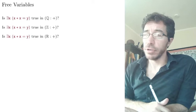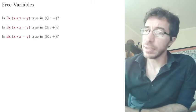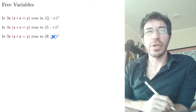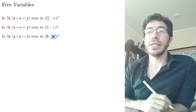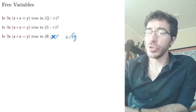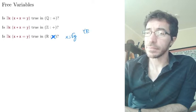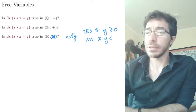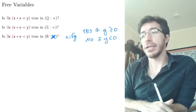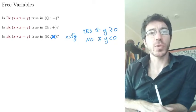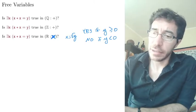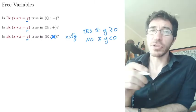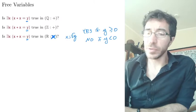On the reals, it's true again. But it's more interesting if we use times instead. Then x would have to be the square root of y, so the answer is yes if y is positive and no if y is negative — negative numbers don't have square roots in the reals. So this is not a well-posed question; the variable y here is free. The formula doesn't tell us what it is. This is called a free variable.